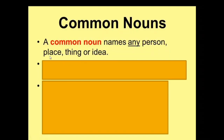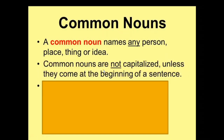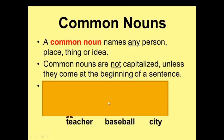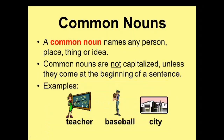As the name shows, a common noun names any person, place, thing, or idea. Common nouns are not capitalized because they are common, unless they come at the beginning of a sentence. You know the rules of sentence structure — at the start of a sentence, the word should be capitalized.